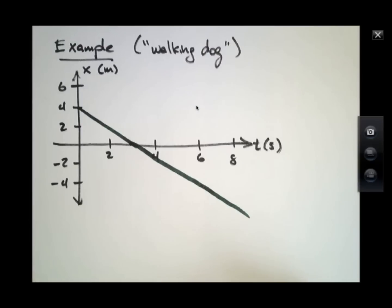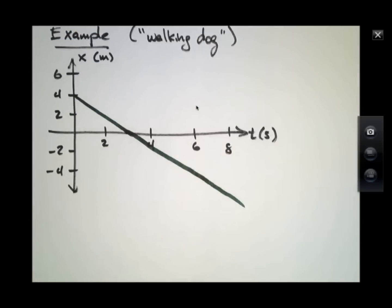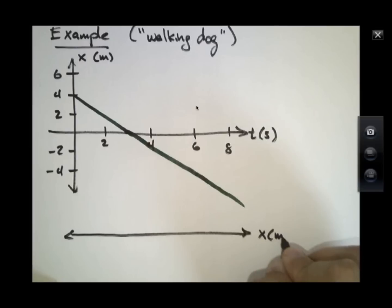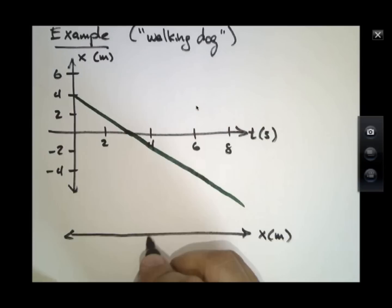We call this the walking dog example because if we were to simply draw a number line and indicate where this object is, we might have our origin there.